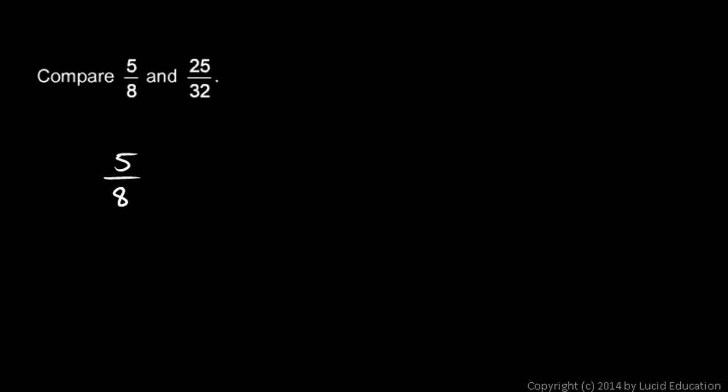What we'll do is rewrite the 5-eighths so that it has a denominator of 32. So I'll come down here and write 5-eighths is equal to something over 32. And I need to find out what that something is. And this isn't hard. 8 times what gives me 32? 8 times 4.